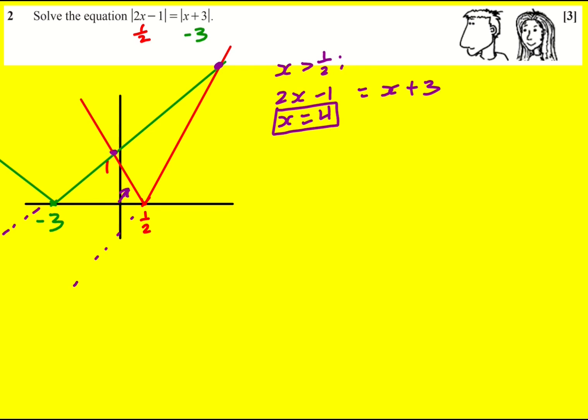For the second intersection between -3 and 1/2, I still get x+3, but now the negative part of the modulus: -2x+1 = x+3. Rearranging gives 3x = -2, so x = -2/3. That's everything we need.